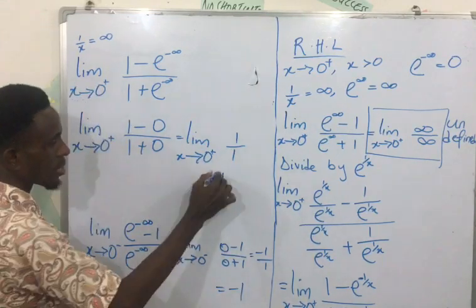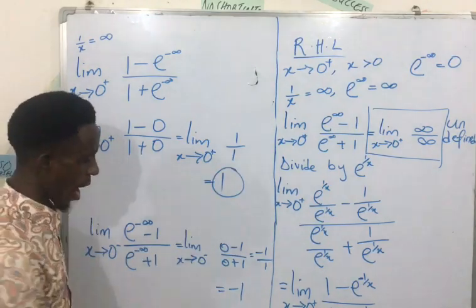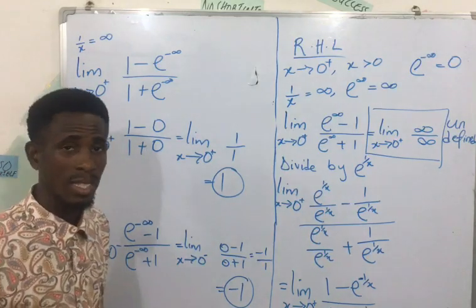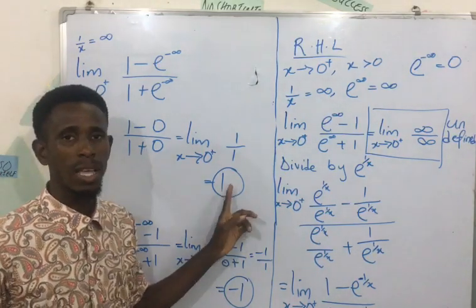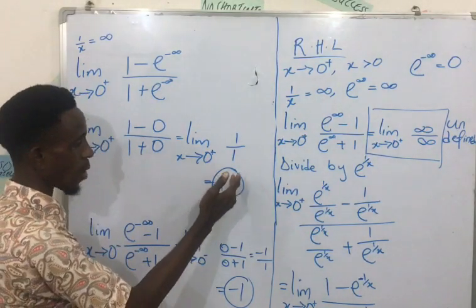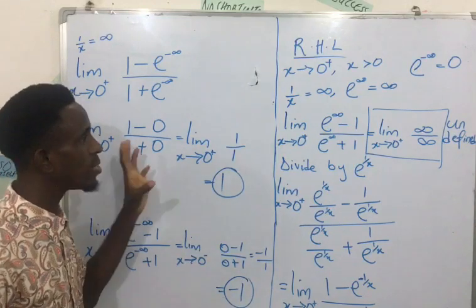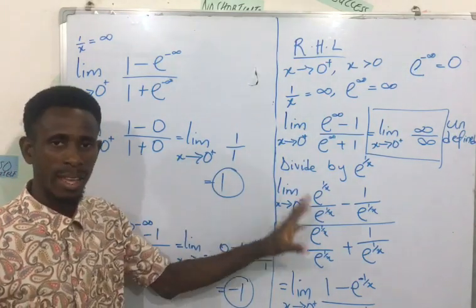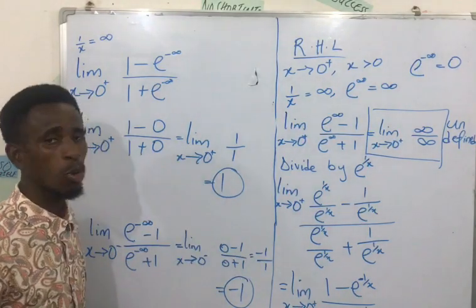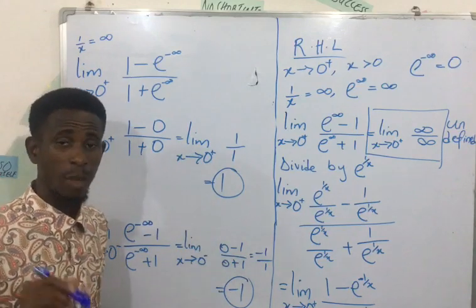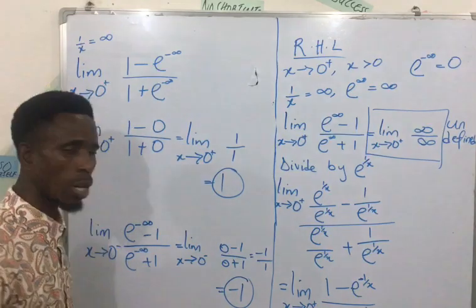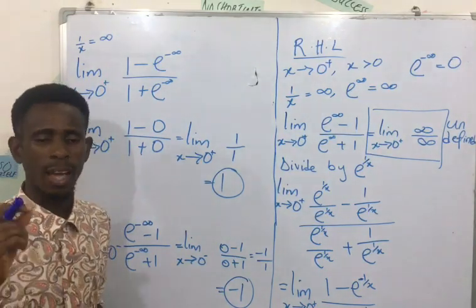The right-hand side gave us 1 and the left-hand side gave us minus 1. Since the right-hand limit and the left-hand limit are not equal, this limit does not exist — which is exactly what the question asked us to show. If you have any questions, ask in the comment section. If you haven't subscribed to the channel, please do to get all our videos. See you in the next class.